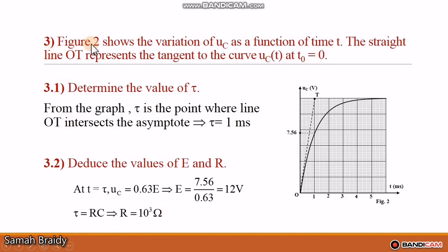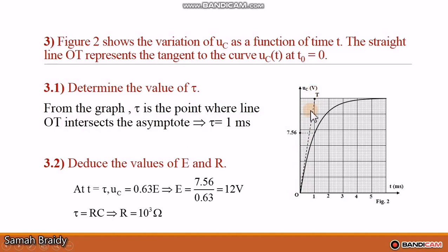Part 3: Figure 2 shows the variation of UC as a function of time t. The straight line OT represents the tangent drawn to the curve UC at t equal to 0. This graph shows the charging behavior of the capacitor over time.